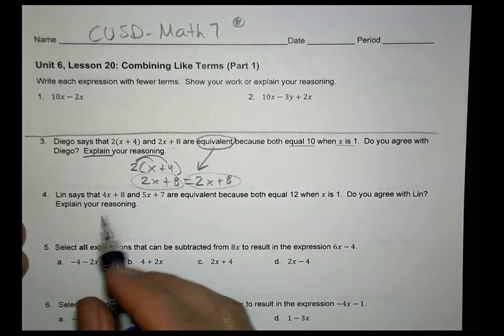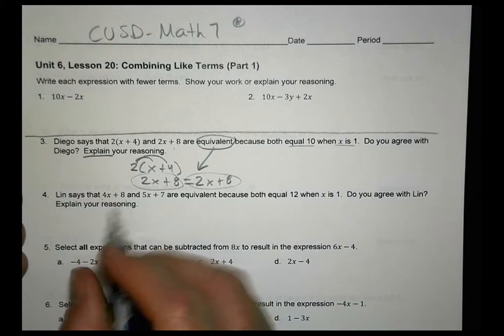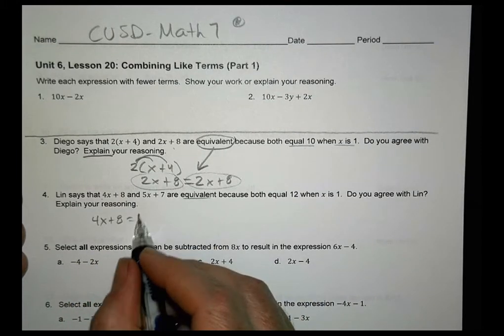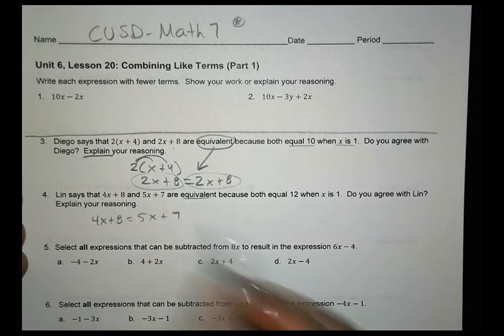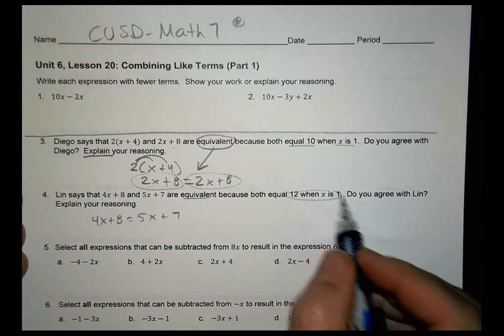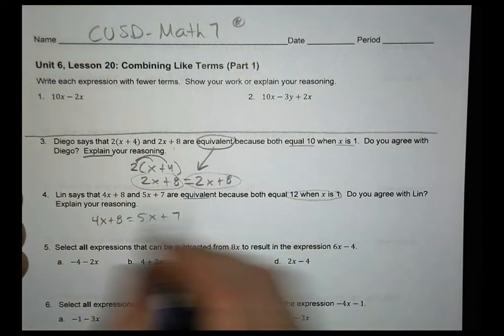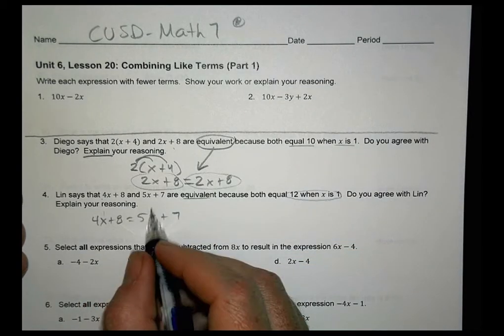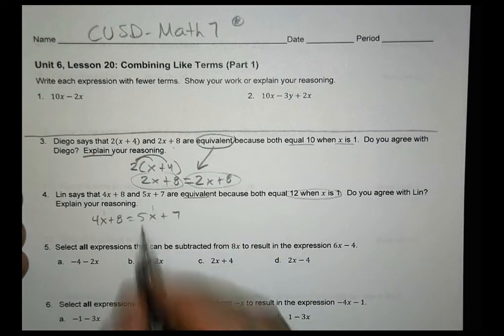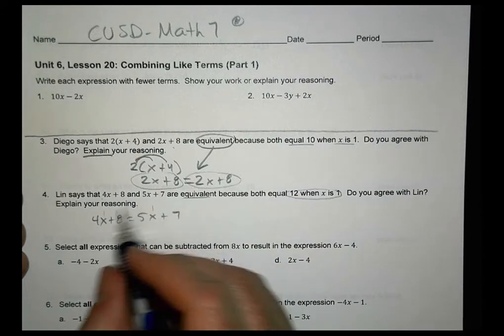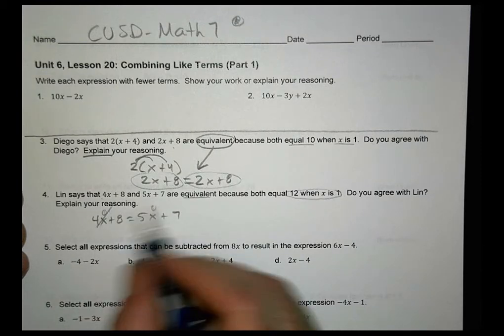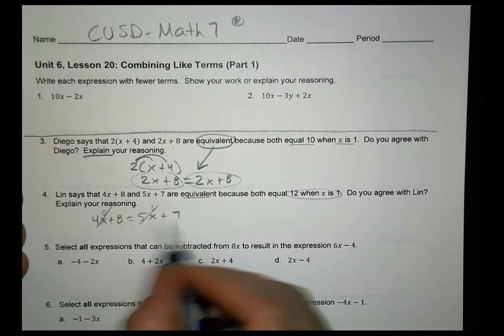Unlike number 4, which says 4x plus 8 is equivalent to 5x plus 7. Okay. Now, they say because both equal 12 when x is 1. And that might be true. I could put a 1 here and put a 1 here and they both equal 12 and we're good to go. But is it always going to be the case? Because what if I put a 0 right here and a 0 here? I ended up with nothing and nothing. And does 8 equal 7?